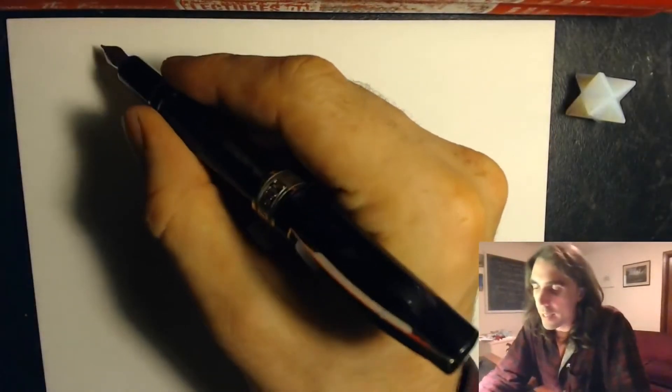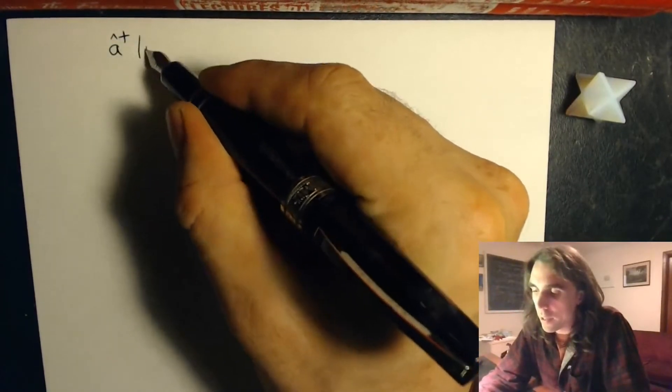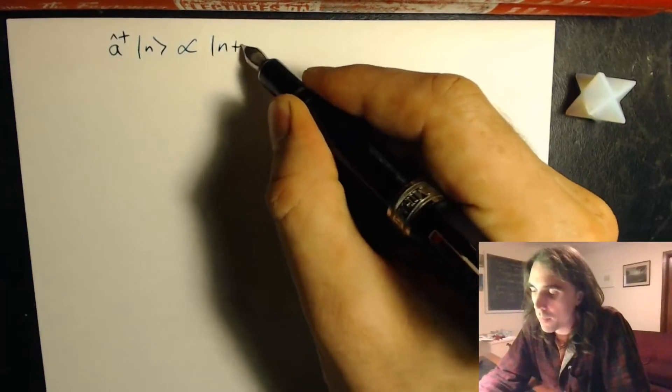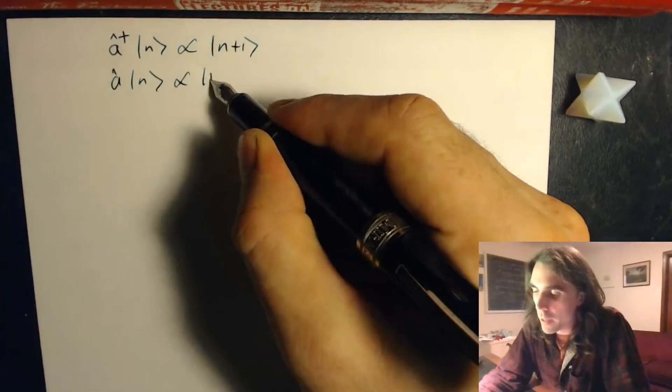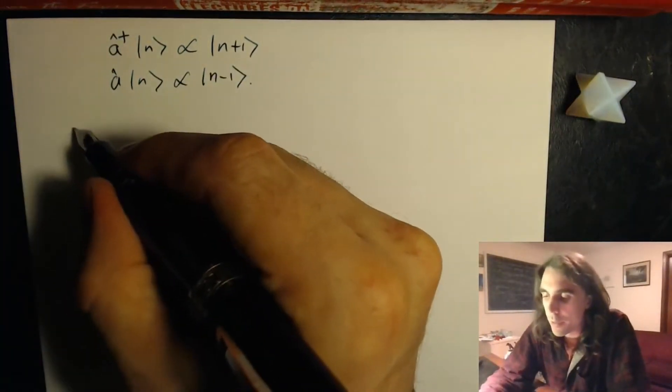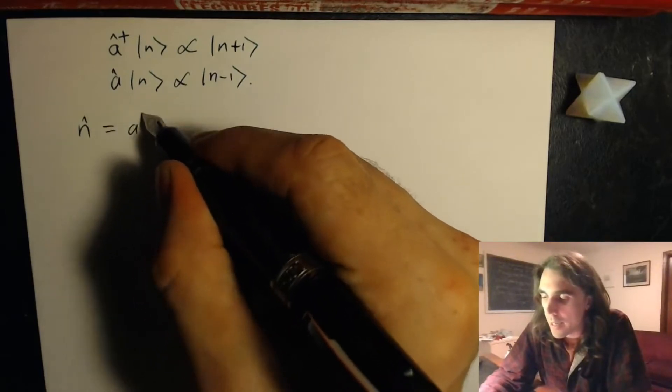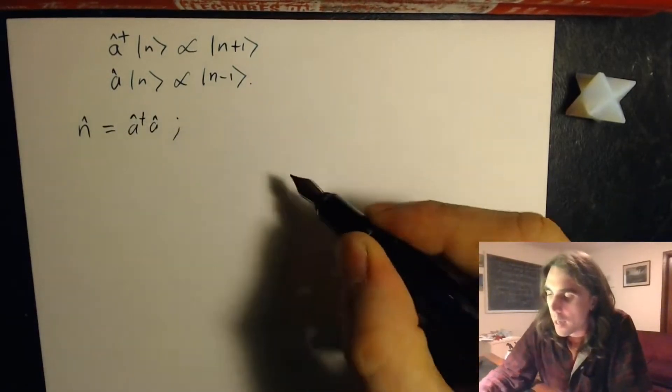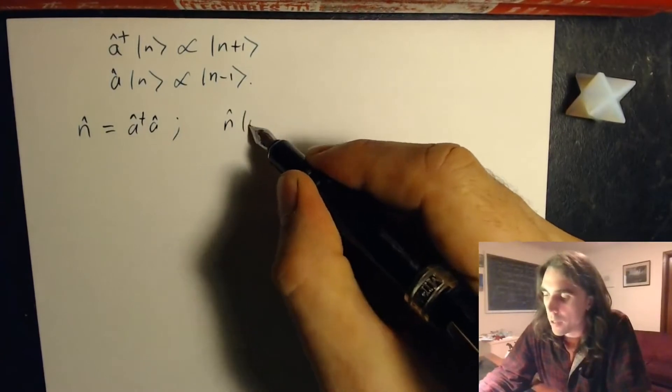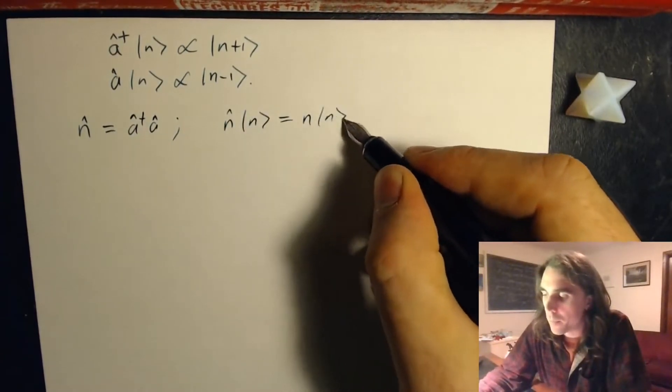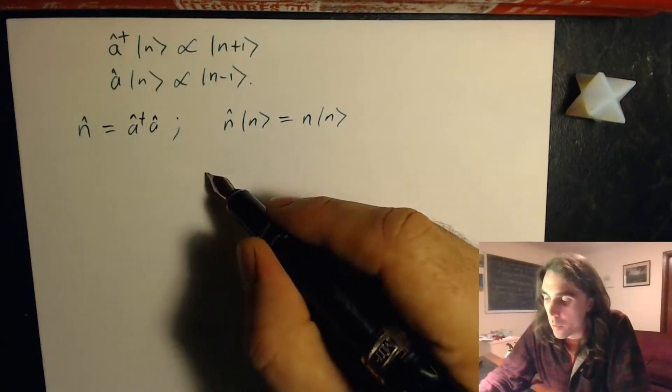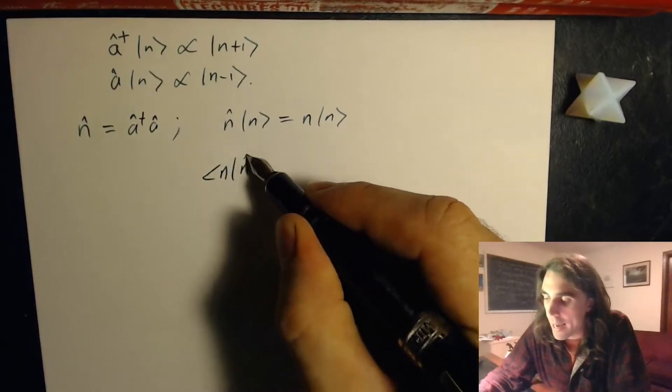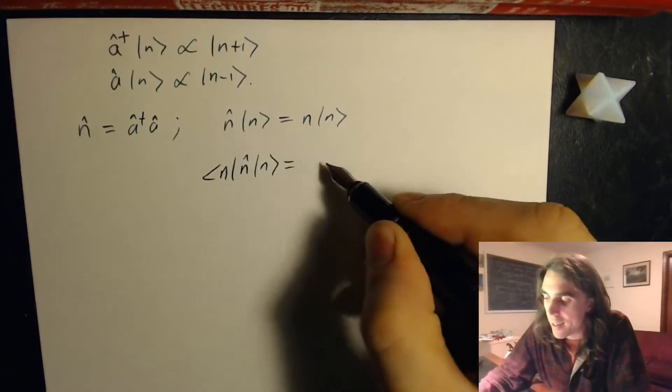Okay, so to look at the normalization of these states, we have that a dagger acting on n is proportional to n plus 1, and a acting on n is proportional to n minus 1. And we also have the definition of the number operator as a dagger a, and we know that the number operator acting on state n just returns the number n as its eigenvalue. So if we act on this from the left with bra n, we find that the expectation value of n in state n is n.